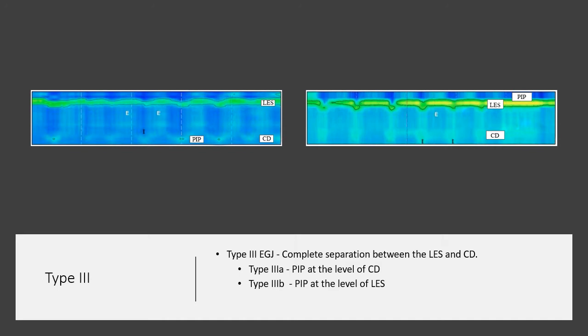In a type 3 esophagogastric junction, there is complete separation between the lower esophageal sphincter and the crural diaphragm. In a type 3a, the pressure inversion point is at the level of the crural diaphragm. In a type 3b, the pressure inversion point is at the lower esophageal sphincter.